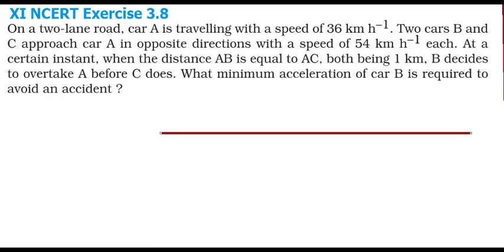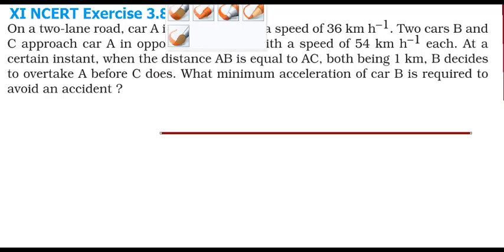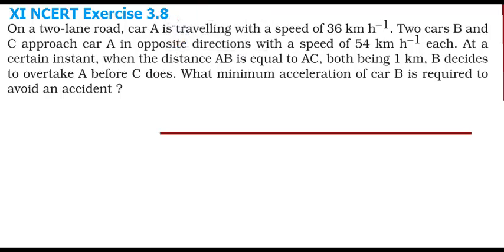There is one particular car, car A, which is going at a speed of 36 km/h. You can convert that using 5/18, so 36 km/h gives you 10 m/s. So car A is going in some direction at 10 m/s.